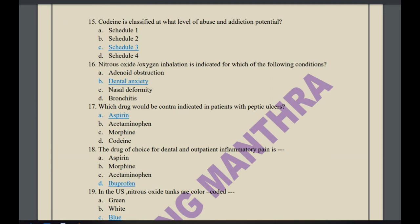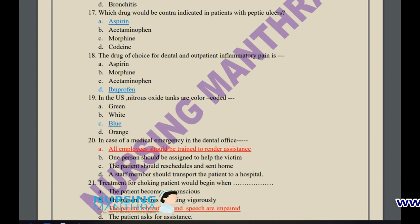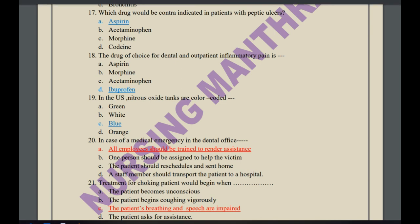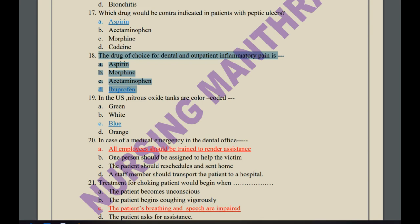Questions on biomedical waste management and infection control are also included, along with sterilization of dental instruments. For dental drugs: which drug is contraindicated in a patient with peptic ulcer? The answer is aspirin — acetaminophen, morphine, and codeine are the other options. The drug of choice for dental outpatient inflammatory pain is ibuprofen. In the US, nitrous oxide tanks are color-coded blue.